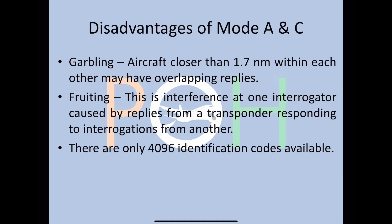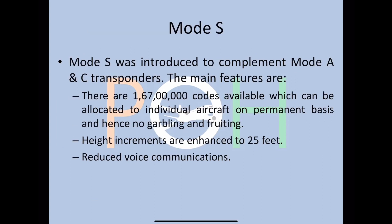The disadvantages of SSR: garbling is possible — aircraft closer than 1.7 nautical miles may have overlapping replies, since Mode A and C are not as selective as Mode S. Fruiting is interference at one interrogator caused by replies from an aircraft responding to another interrogator, meaning interrogation can be interfered with even when not asked for. There are also only 4,096 codes available.